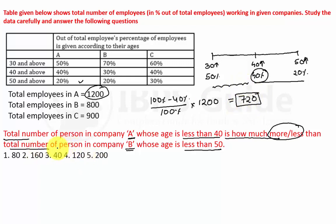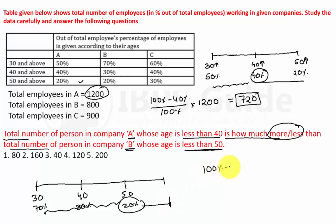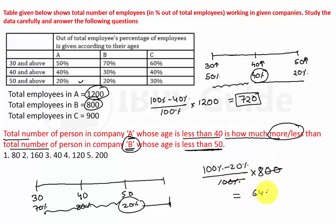Now the same concept is applied for Company B: employees whose age is less than 40. In Company B: 30 and above is 70%, 40 and above is 30%, 50 and above is 20%. Less than 40 means 100% minus 30%, which is 70%. 70% of 800 gives 560. Wait — the difference between 720 and 640 is 80. Option number 1 will be the correct answer.